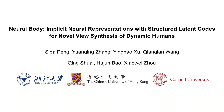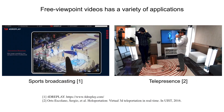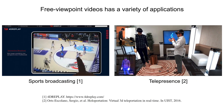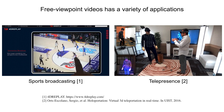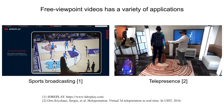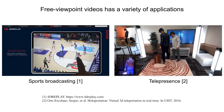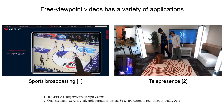We present Neural Body, a new method for representing dynamic humans that achieves photorealistic view synthesis from very sparse input views. Free viewpoint videos of human performers have a variety of applications such as movie production, sports broadcasting, and telepresence.